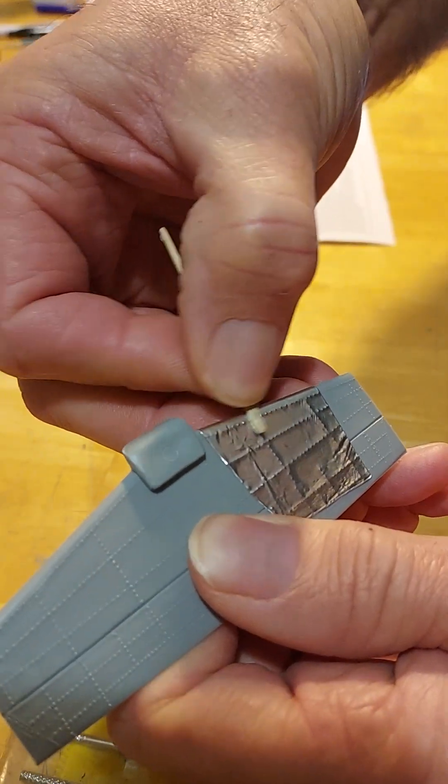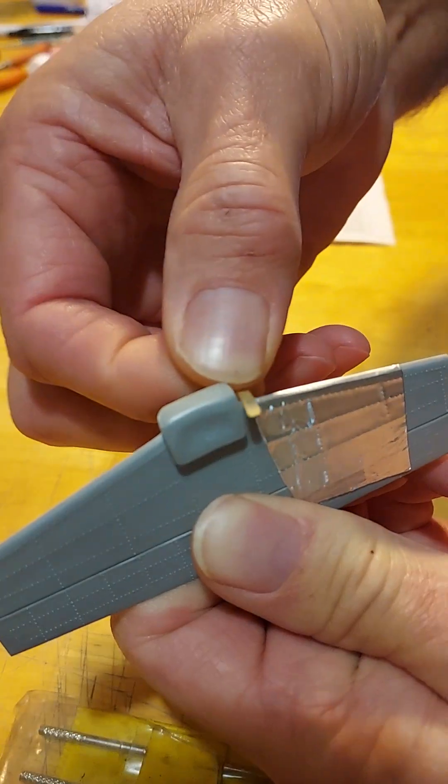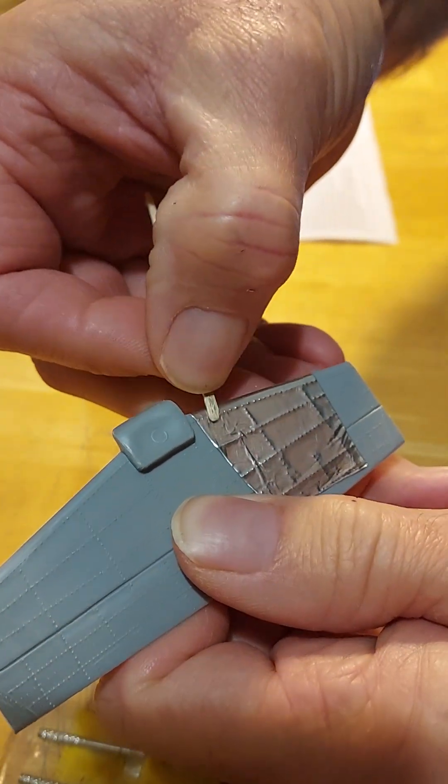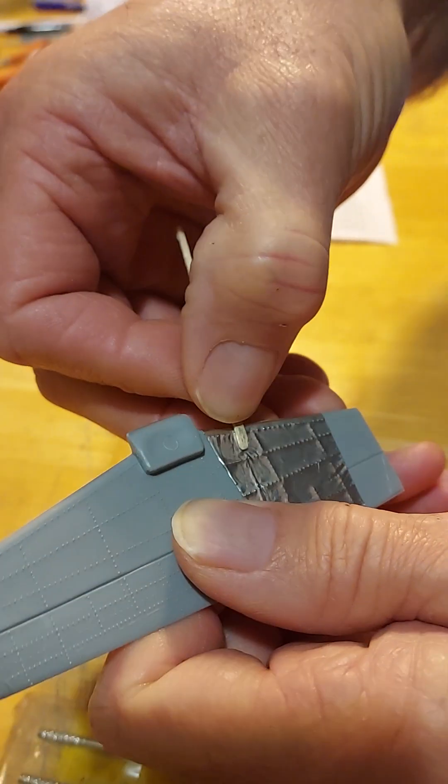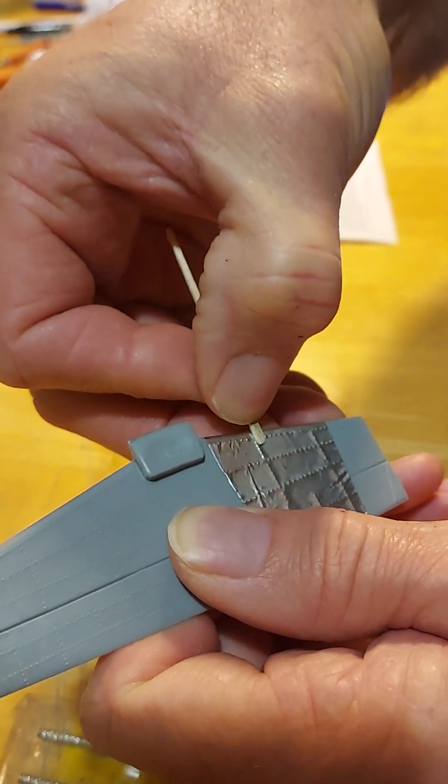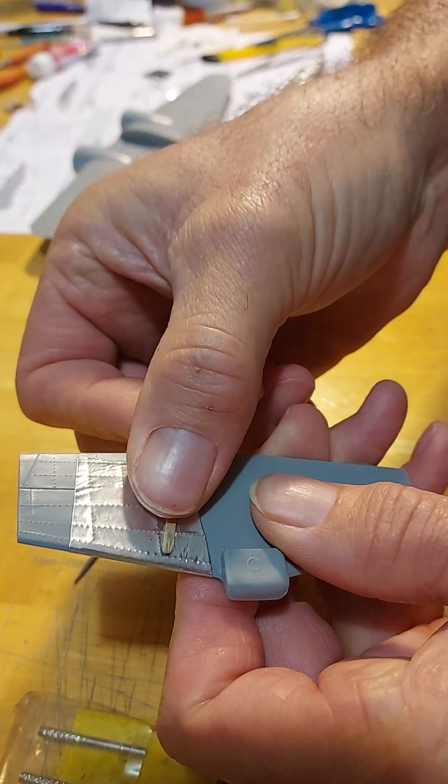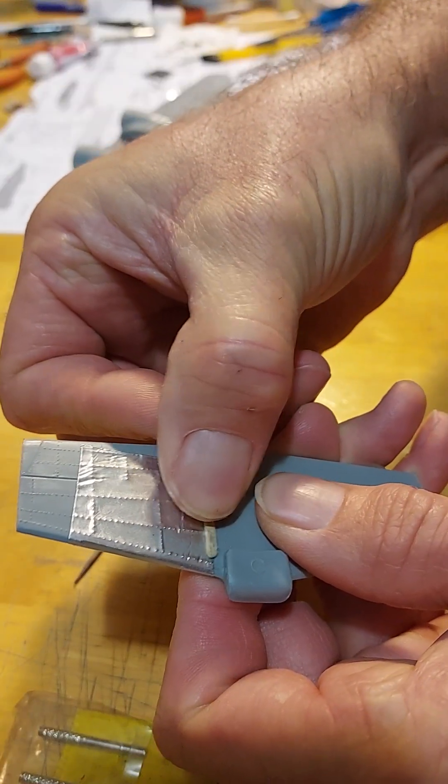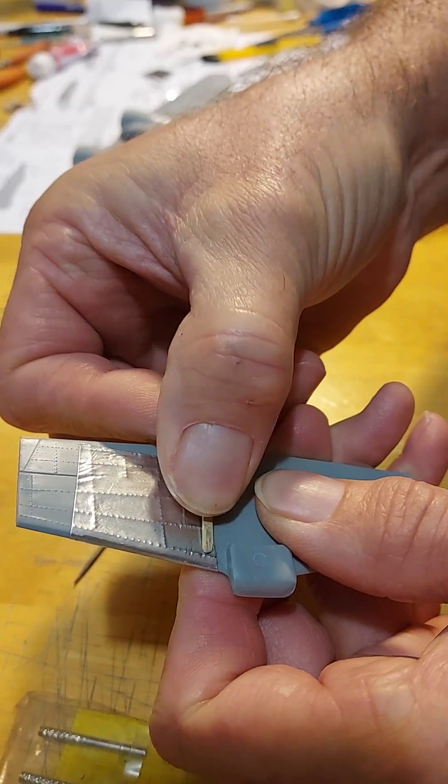Basically, you're just going to smooth it all in, and as you go, you see the little rivets right there? You just smooth it all in with your rivets so you can get your rivet detail. Just go a little at a time.